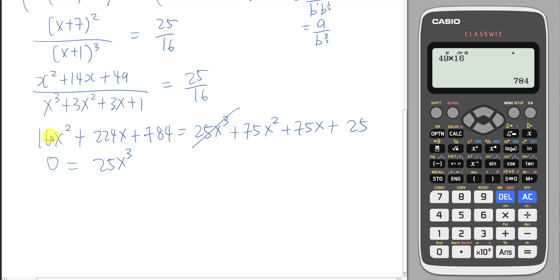This thing I solve already. Then 75, if I minus 16, I should get 59 x squared. Solve already. Then this one has 75x. I want to minus 224x. So I have minus 149x. Solve already. Then lastly is a number. 25 minus 784 is negative 759.